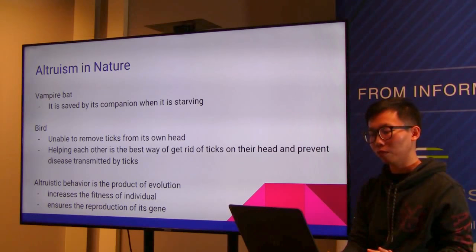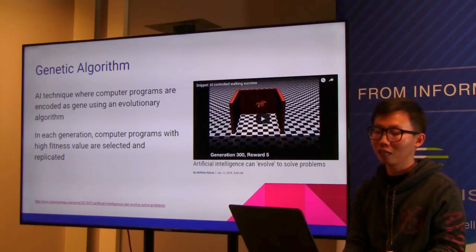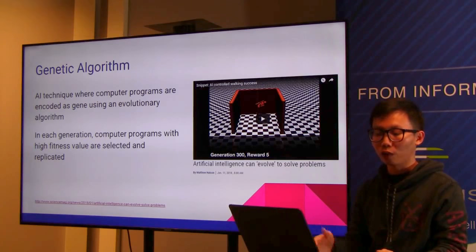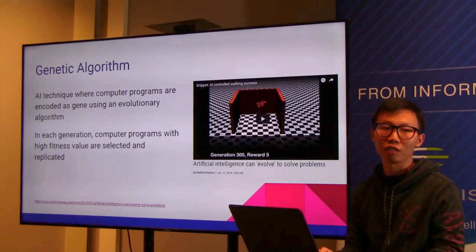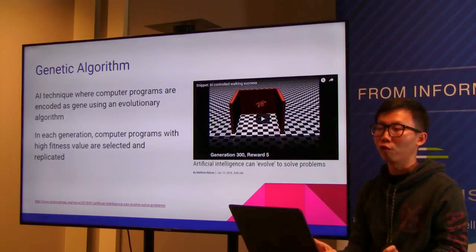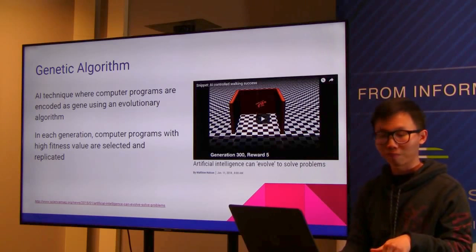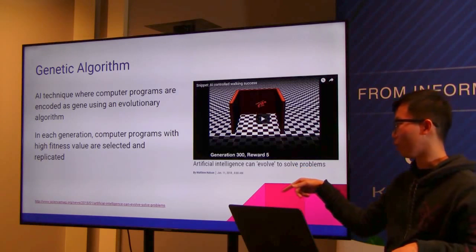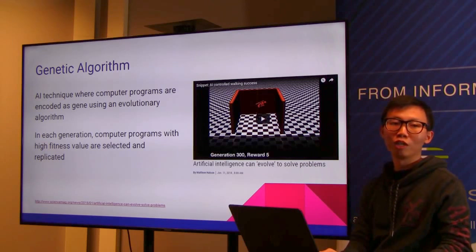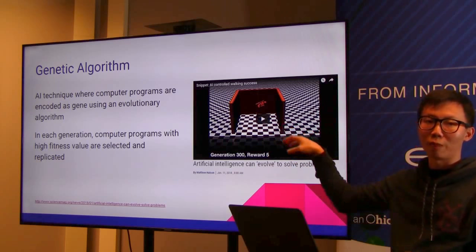In AI, the genetic algorithm uses this as an analogy, trying to find computer programs with the highest fitness — meaning programs that can fulfill tasks most efficiently across generations.